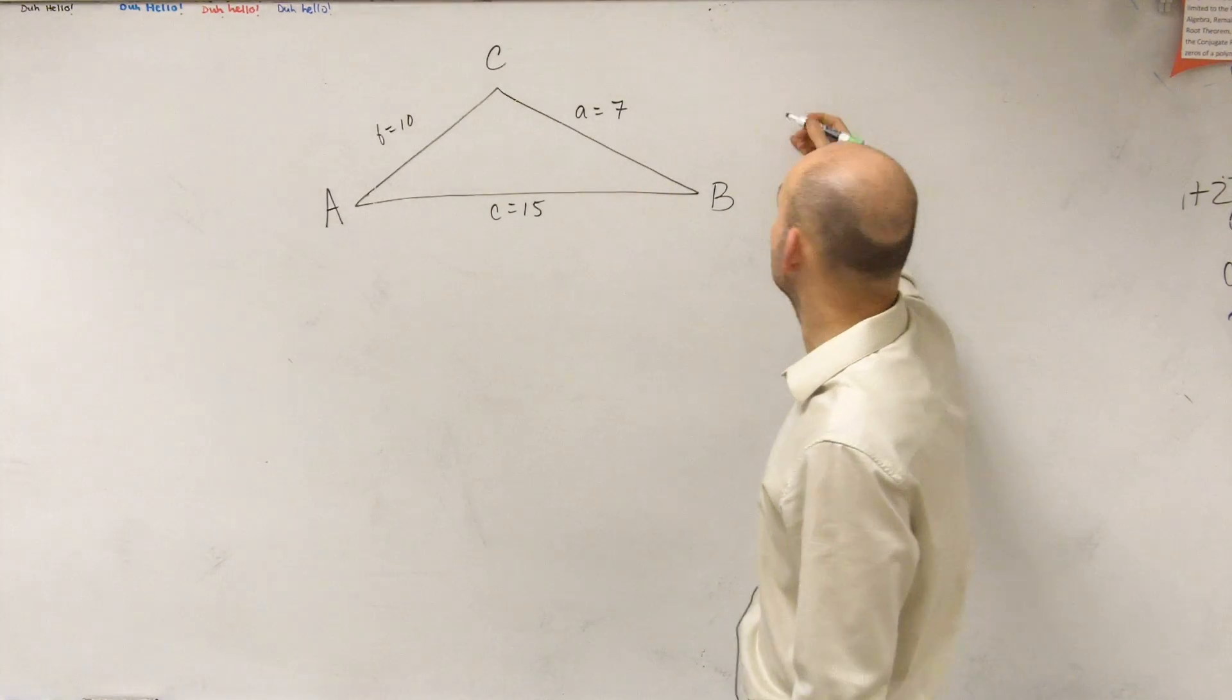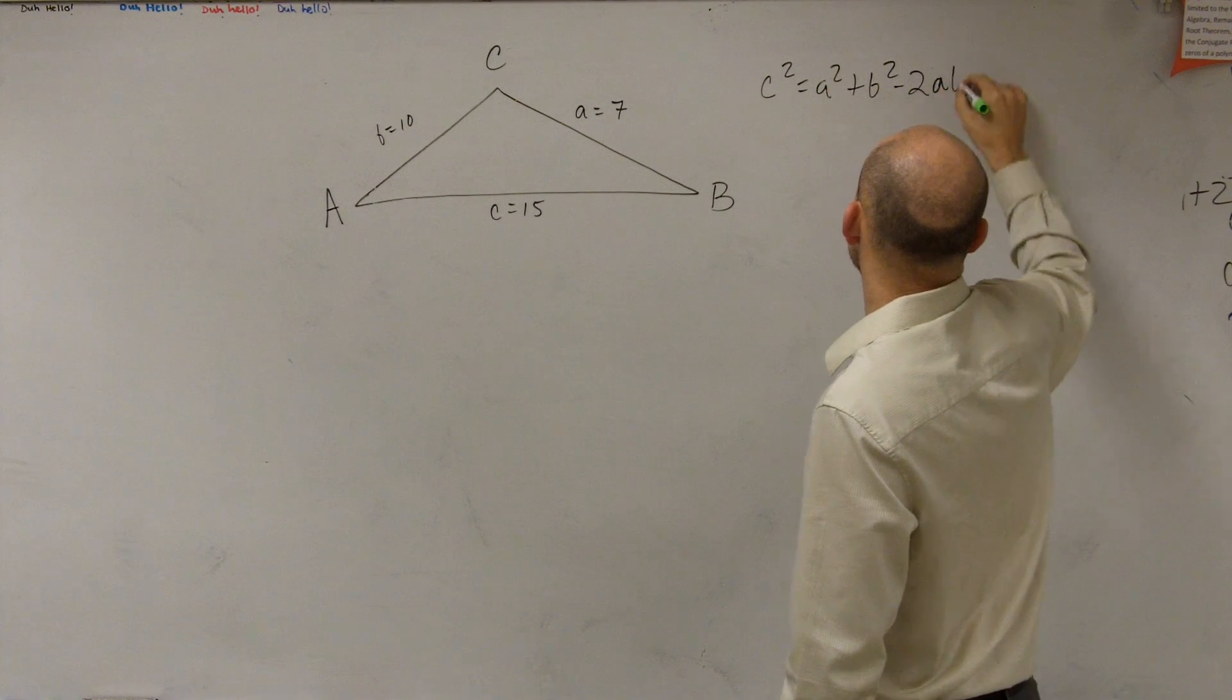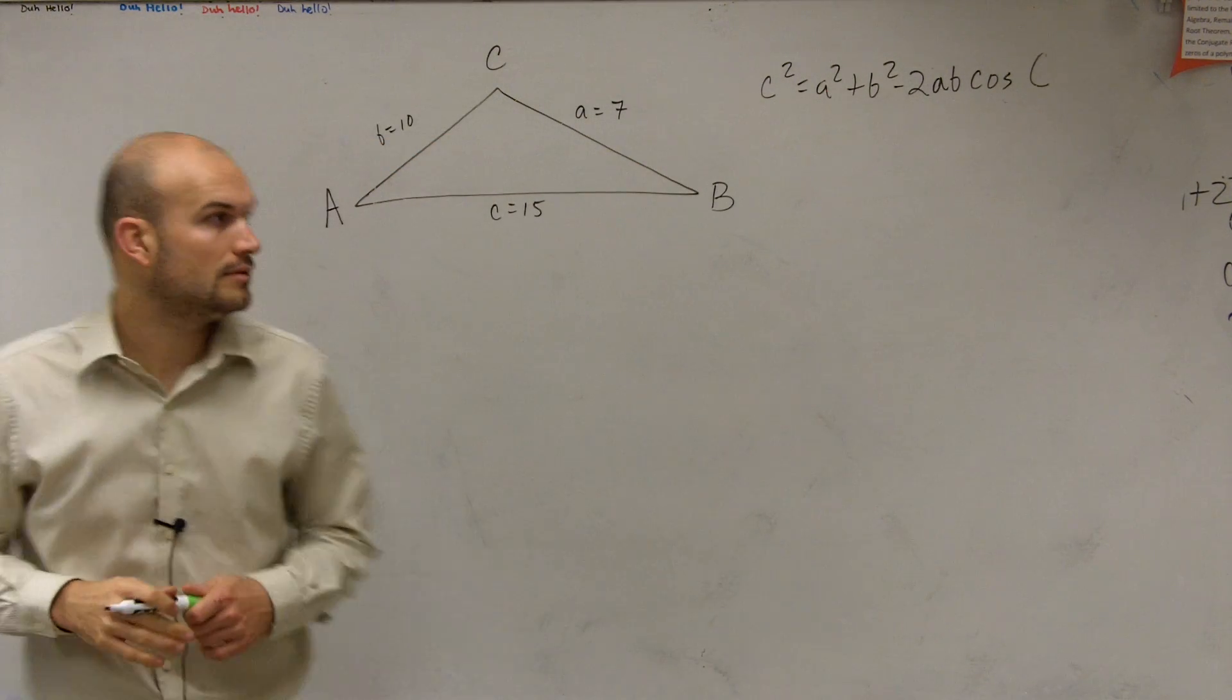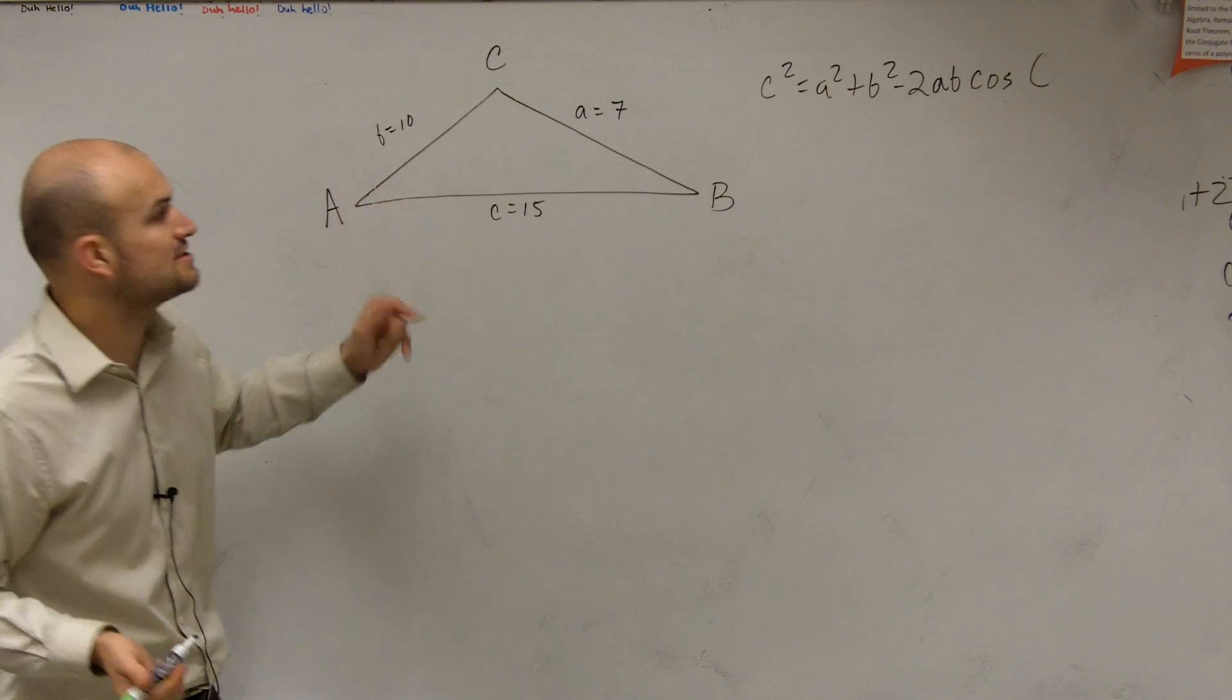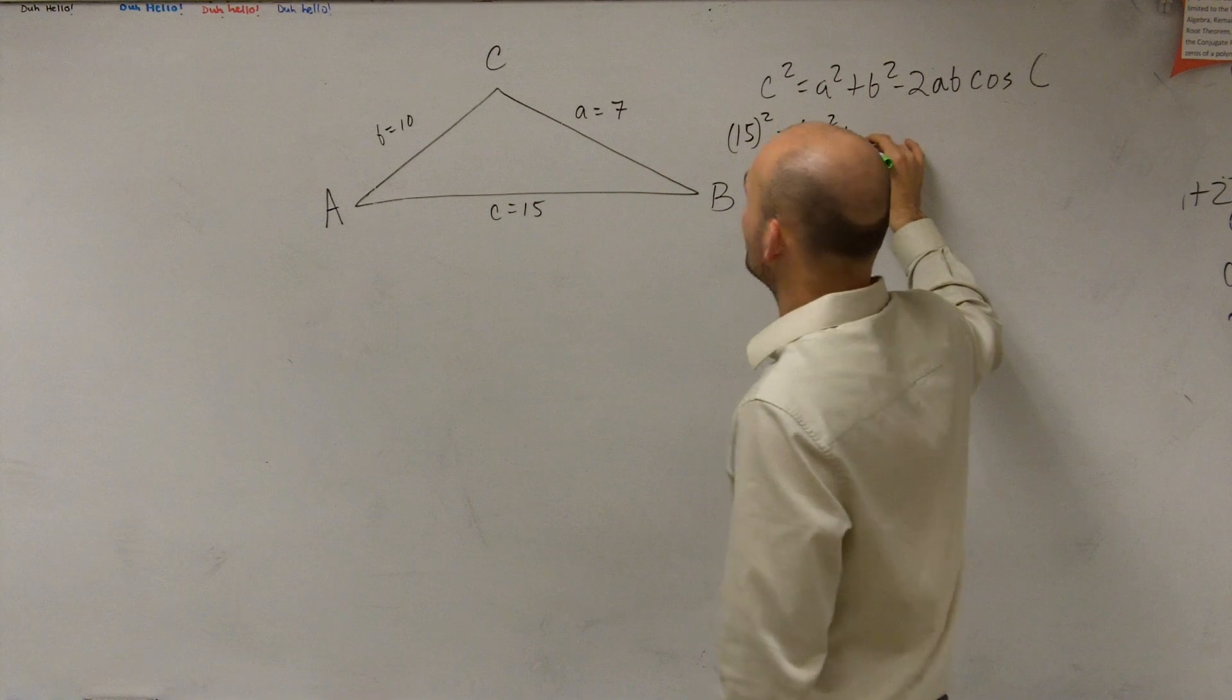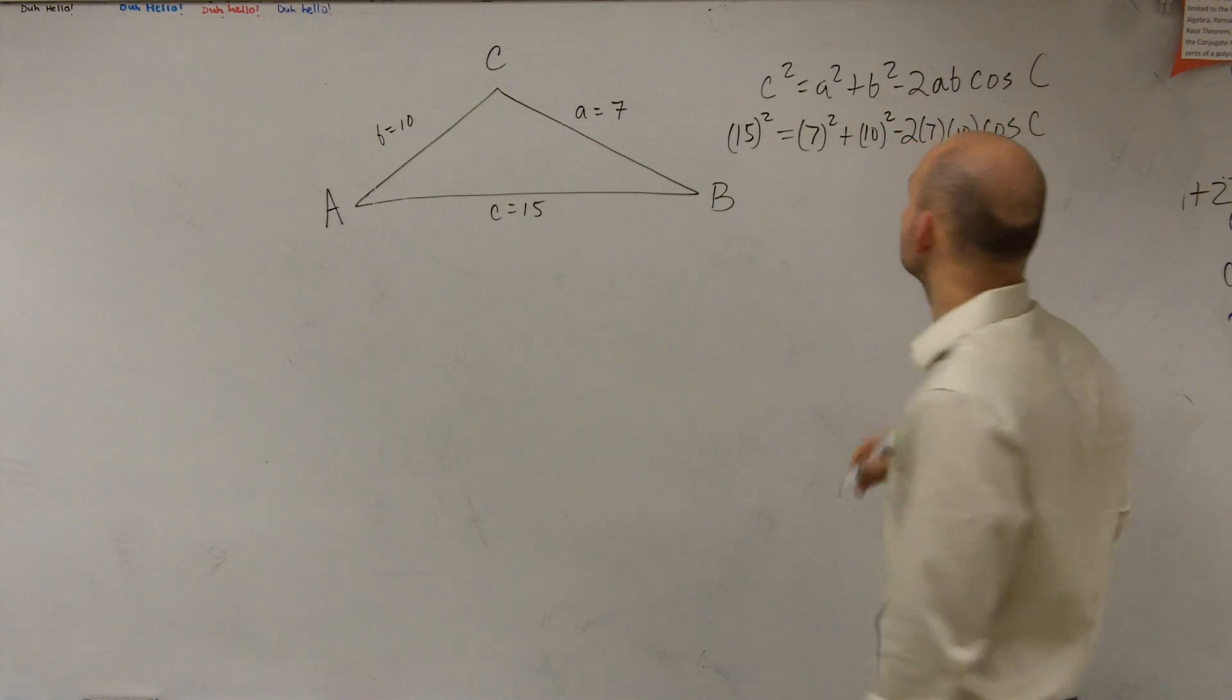So let's go and write in the formula for the law of cosines for angle c. So we have c squared equals a squared plus b squared minus 2 times a times b times cosine of c. So now what we're going to do is just evaluate, plug in our values that we have, and then solve. So we have c squared, 15 squared equals 7 squared plus b squared, which is 10 squared, minus 2 times 7 times 10 times the cosine of c.